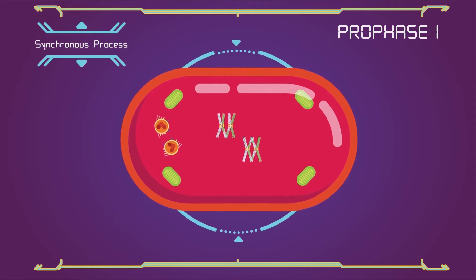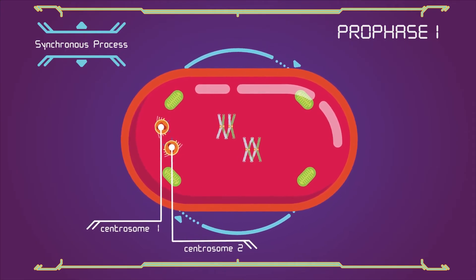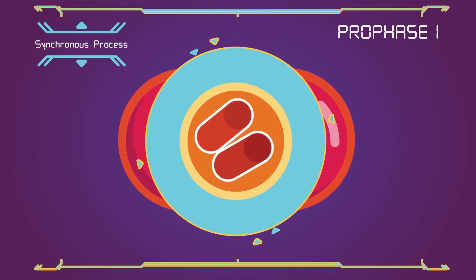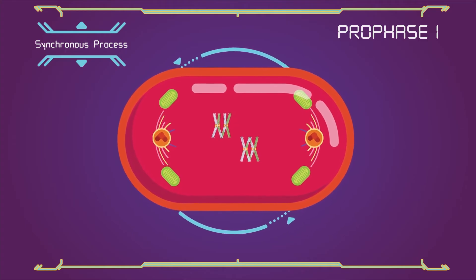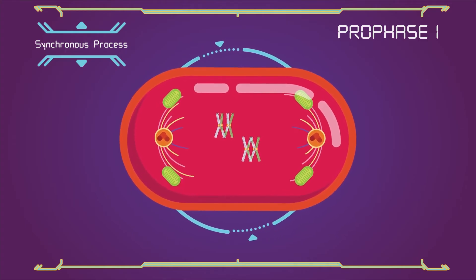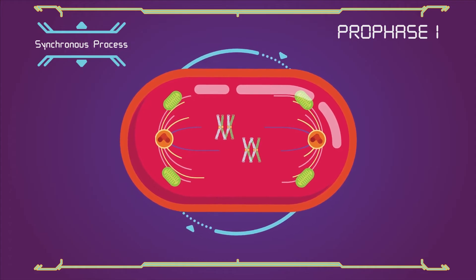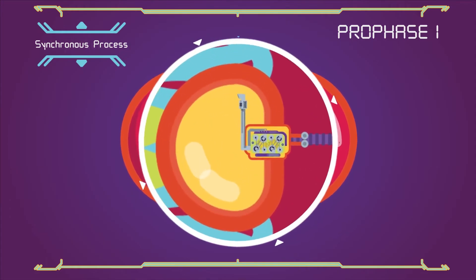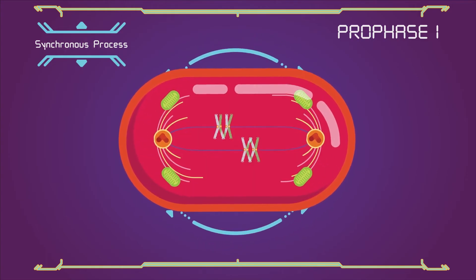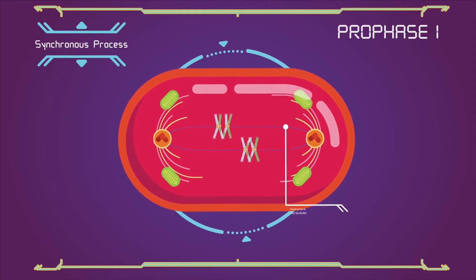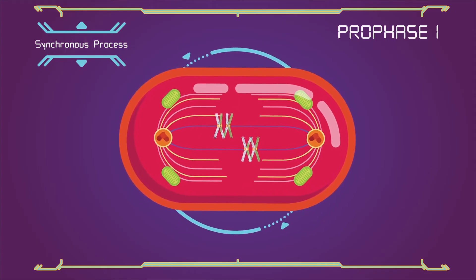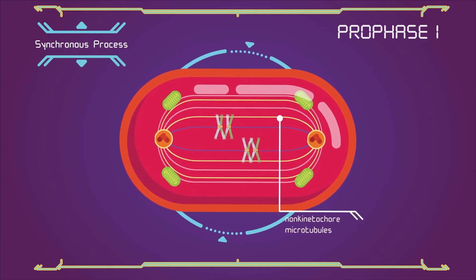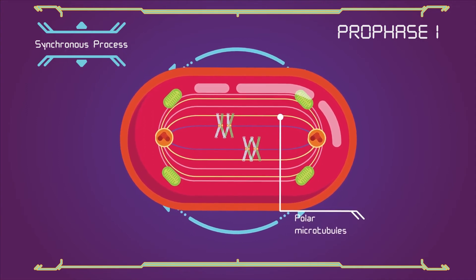Synchronous process. During these stages, two centrosomes, containing a pair of centrioles in animal cells, migrate to the two poles of the cell. The microtubules invade the nuclear region after the nuclear envelope disintegrates, attaching to the chromosomes at the kinetochore. The kinetochore functions as a motor, pulling the chromosomes along the attached microtubule. Microtubules that attach to the kinetochores are known as kinetochore microtubules. Other microtubules will interact with microtubules from the opposite centrosome. These are called non-kinetochore microtubules or polar microtubules.